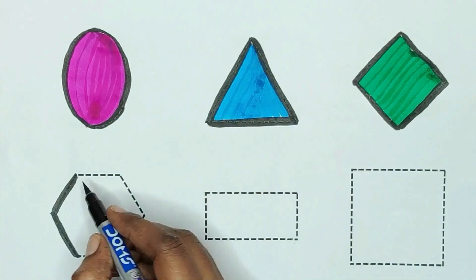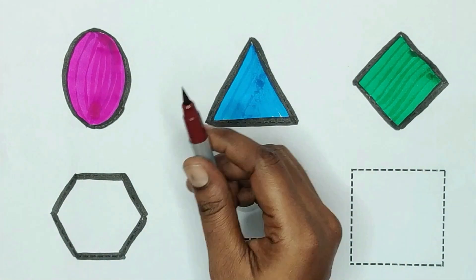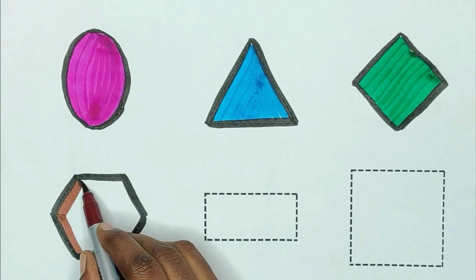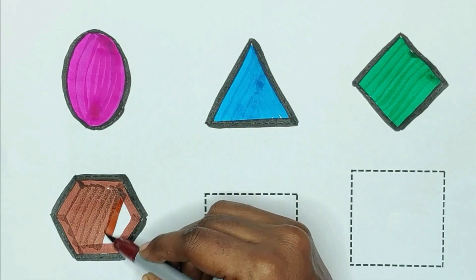Next, hexagon. The shape is hexagon. Brown color. Brown color hexagon.